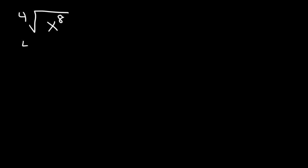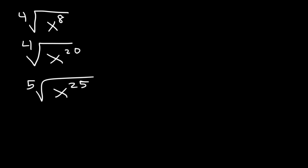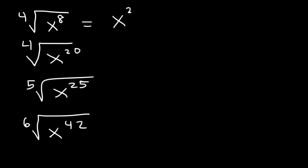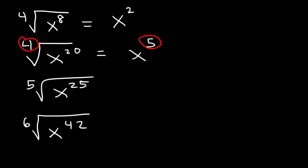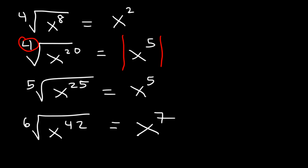Let's try some more examples: the fourth root of x to the eighth, the fourth root of x to the 20, the fifth root of x to the 25th, and the sixth root of x to the 42. 8 divided by 4 is 2 — even result, no absolute value needed. 20 divided by 4 is 5 — even index, odd exponent, so we enclose using absolute value. 25 divided by 5 is 5 — odd index, no absolute value needed. 42 divided by 6 is 7 — even index, odd exponent, so we enclose using absolute value notation.